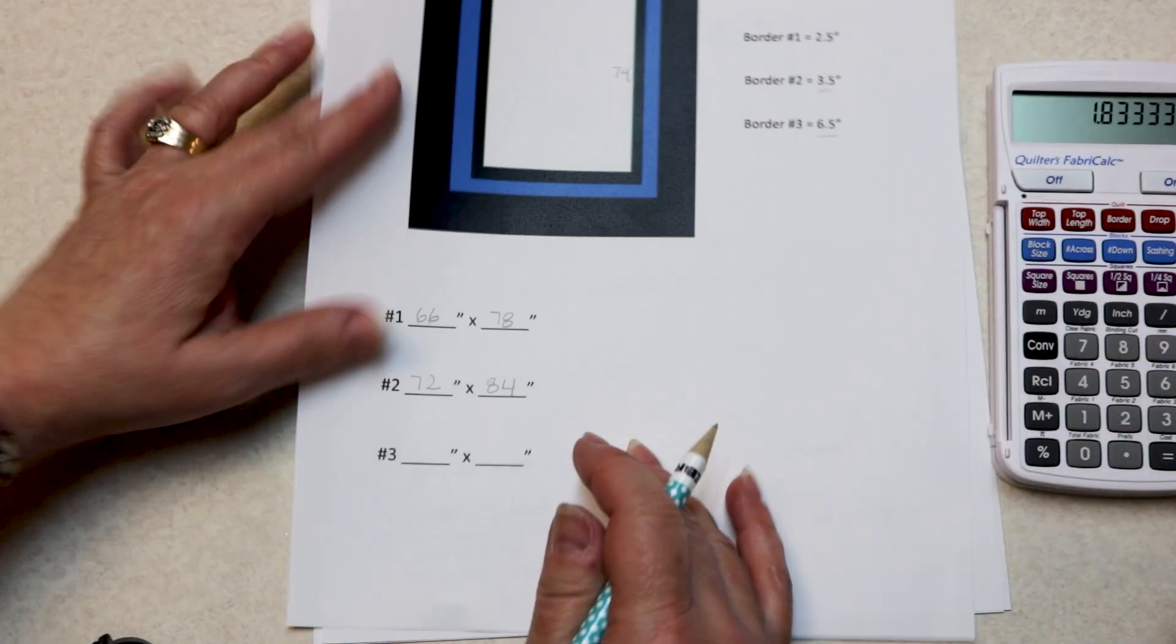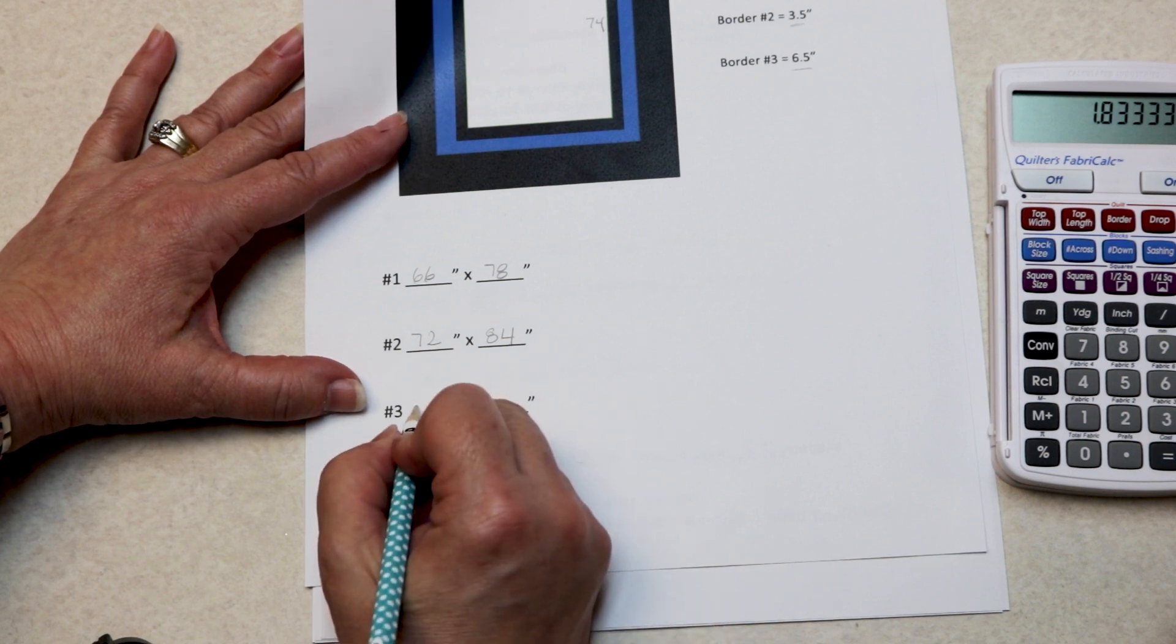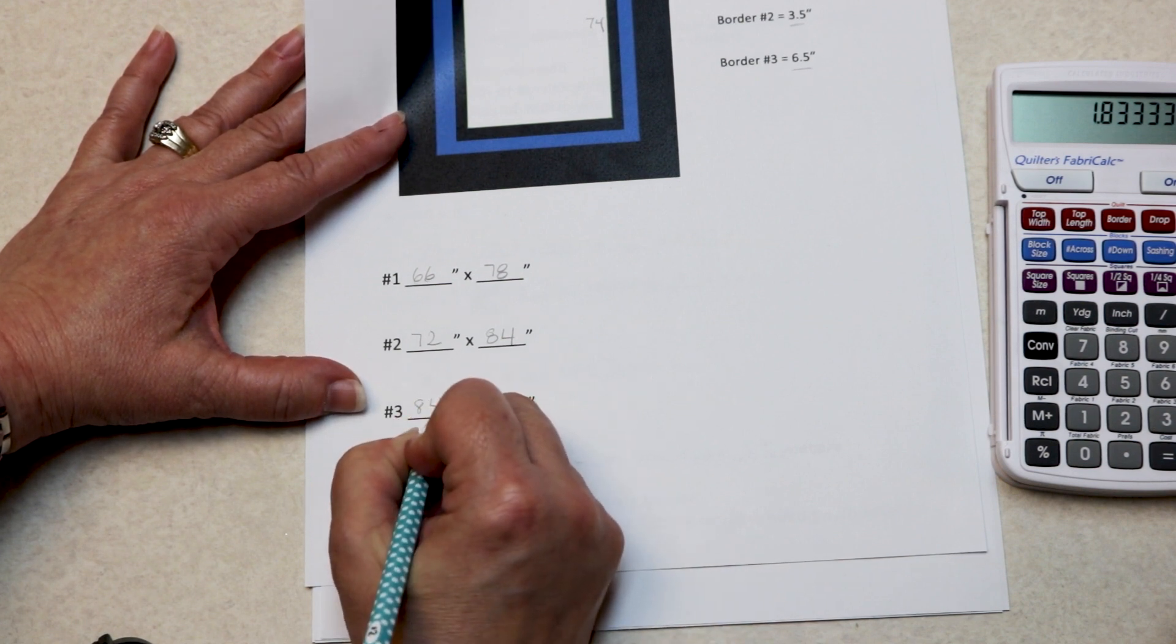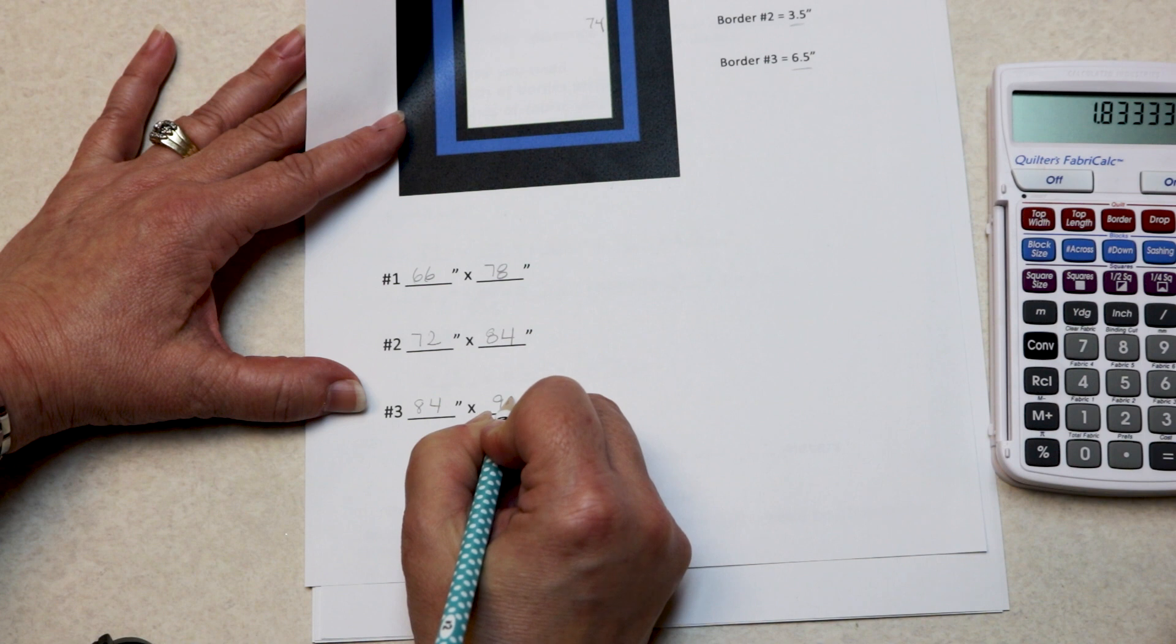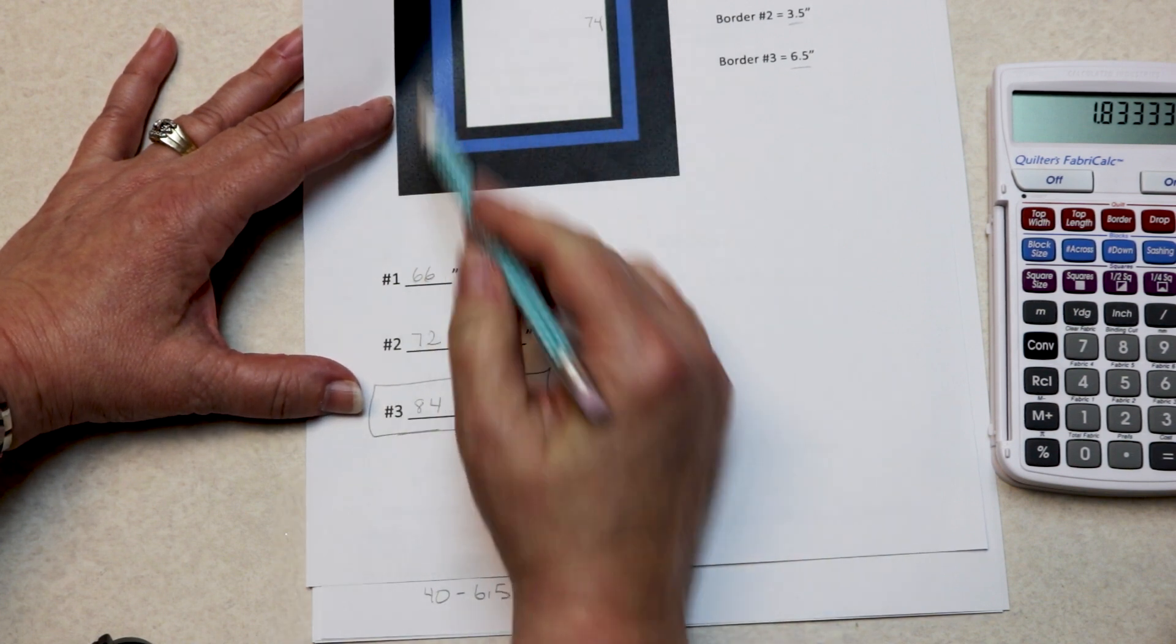I've now added 12 inches to my quilt. So I'm at 84 by 96. This is the size of my quilt right now.